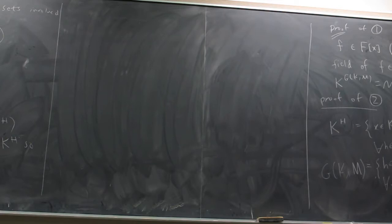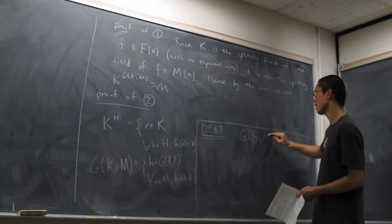Proving this inequality will be too long, so we're going to put it in the 'bad box': |G(K/F)| is at most the degree of the extension, for finite acceptable extensions.